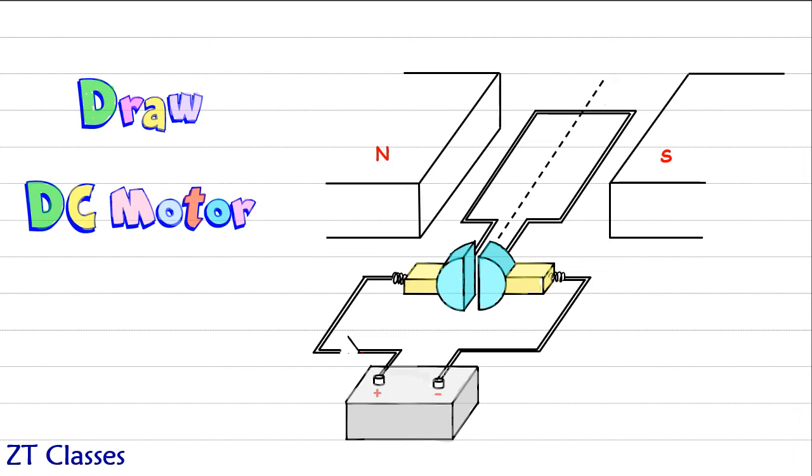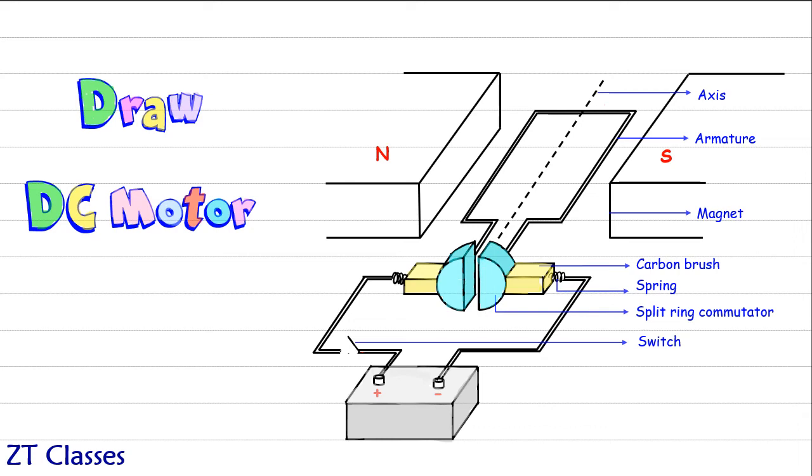The diagram looks complete. Let's do the labeling. This is the main axis, this is your armature, and the North and South poles are your magnets. Then let's label the carbon brush and the spring, and this main part is the split ring commutator. Coming below, we have the battery, the switch, and the battery terminals.